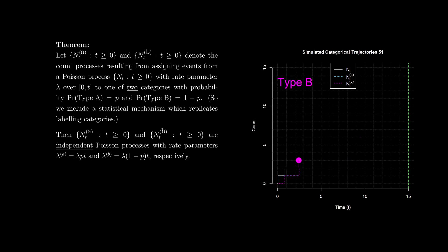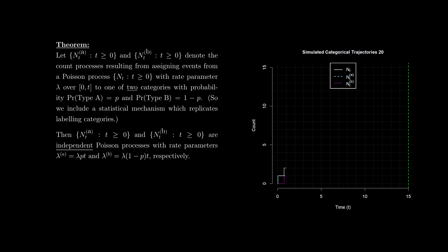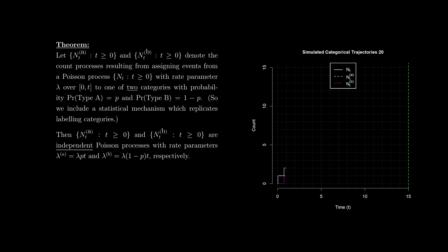Events are assigned to type A with probability p and to type B with probability 1 minus p. We include a statistical mechanism which replicates the assigning of categories. Then N_T^A and N_T^B are independent Poisson processes with rate parameters lambda times p times T and lambda times (1 minus p) times T respectively. So we end up with two independent Poisson processes with adjusted rate parameters.